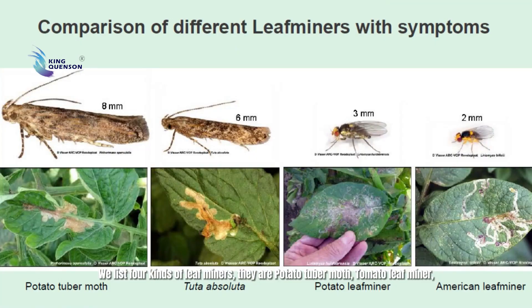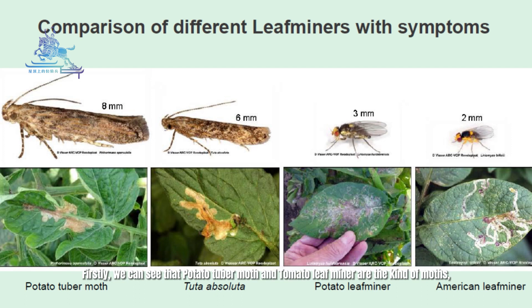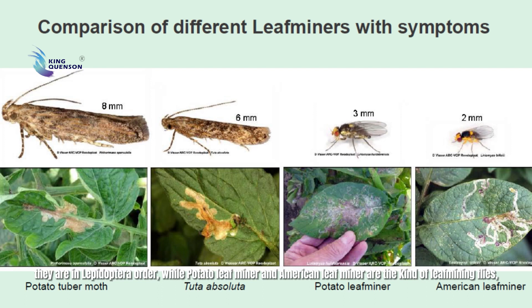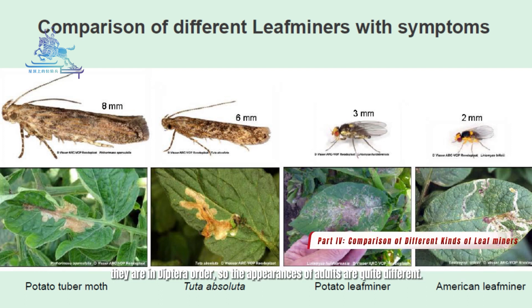Okay, let's look at this picture. We list 4 kinds of leaf miners: potato tubermouth, tomato leaf miner, potato leaf miner, and American leaf miner. Firstly, we can see that potato tubermouth and tomato leaf miner are kinds of moth — they are in the Lepidoptera order — where potato leaf miner and American leaf miner are kinds of leaf mining flies, they are in the Lepidoptera order, so the appearances of adults are quite different.